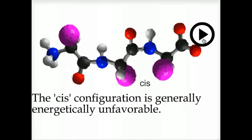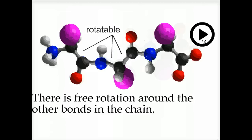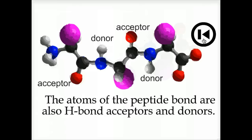The cis configuration is generally energetically unfavorable, although the size of the R group makes a difference. There is free rotation around the other bonds in the chain. The atoms of the peptide bond are also hydrogen bond acceptors and donors.